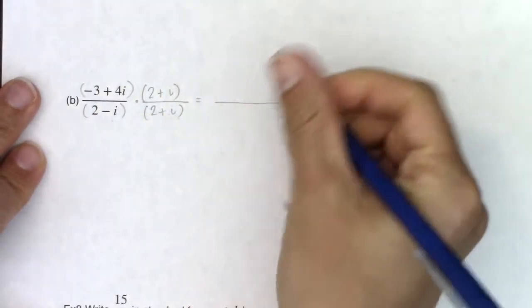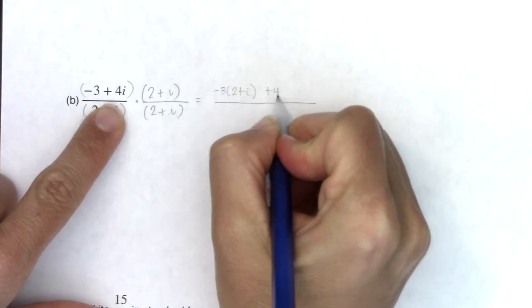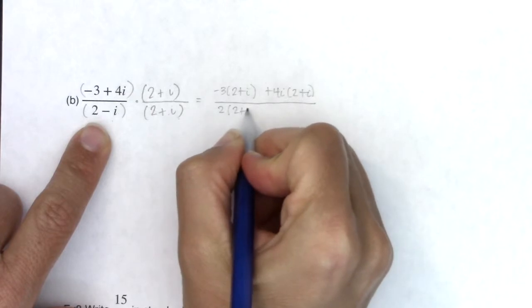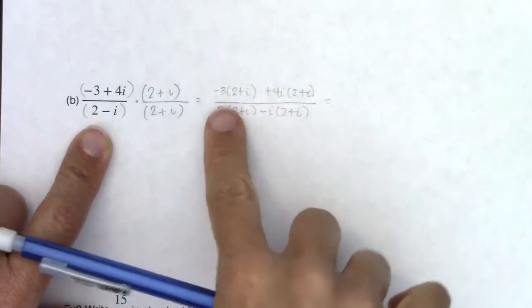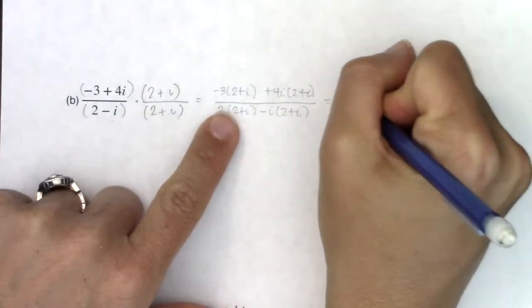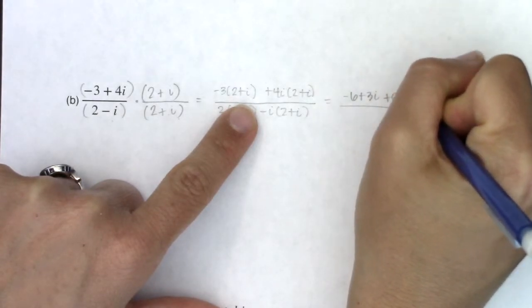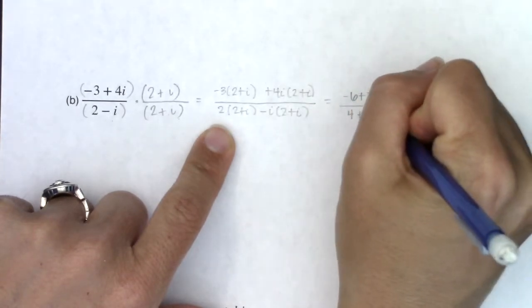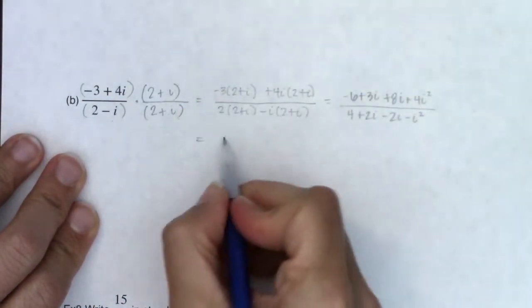If you want to FOIL, go for it. So I've got negative 3 distributed to 2 plus i. I've got 4i distributed to 2 plus i. I've got 2 distributed to 2 plus i, and I've got a minus i distributed to 2 plus i. I'm going to keep on going. I call it double distribution because I have to distribute once and then I got to distribute again. So negative 6 plus 3i plus 8i plus 4i squared. And then we've got 4 plus 2i minus 2i minus i squared. Let's see what we got. I'm going to swap my i squareds out.